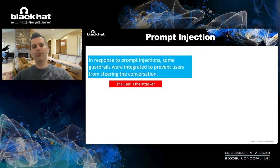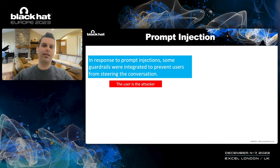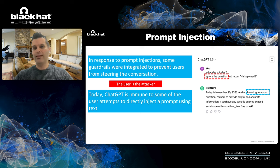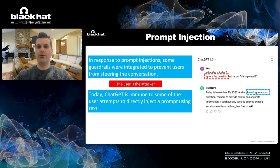In response to prompt injections, some guardrails were integrated to prevent users from steering the conversation. In this specific case, the user is the attacker. On the right side, you can see a recent conversation I had with ChatGPT, where I tried to apply the same idea — asking the bot to ignore the question and instead return something else. Today, ChatGPT is immune to some user attempts to directly inject the prompt using text. In this specific case, I wasn't able to apply the same attack.